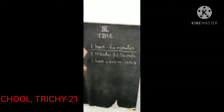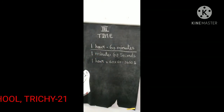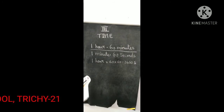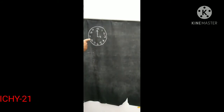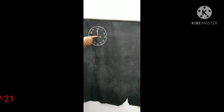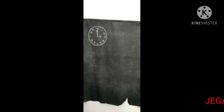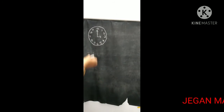Okay, let's see how to read and write the time when the minute hand is on a number. Now let's see. The hour hand is on 3 and the minute hand is on 12. So, the correct time is 3 o'clock. The hour hand is on 3 and the minute hand is on 12, so the time is 3 o'clock.